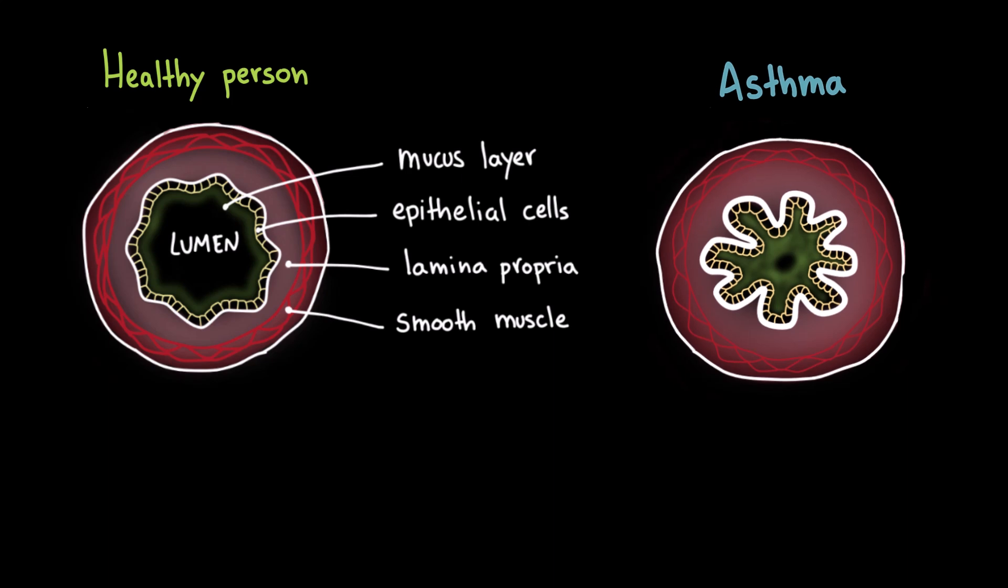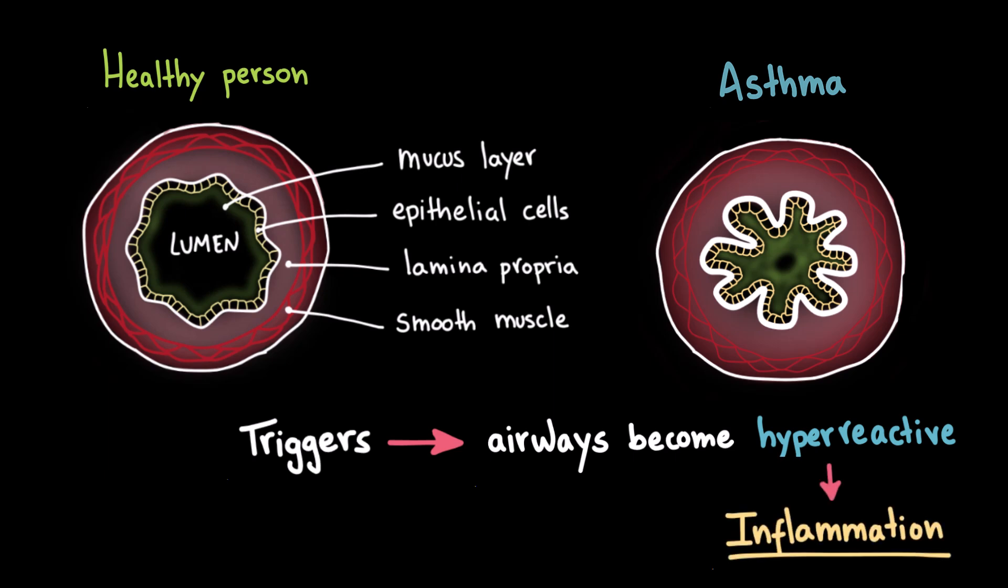Now, in asthma the airways go through a series of changes that make breathing much more difficult. The key problem is that the airways become overly sensitive, or what we call hyperreactive. This means that when they're exposed to triggers like pollen, cold air, or even exercise, they overreact and become inflamed. So let's zoom in and take a closer look at the epithelial lining of the airways to see how this happens.